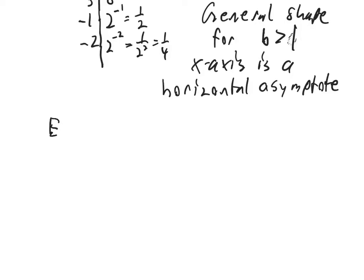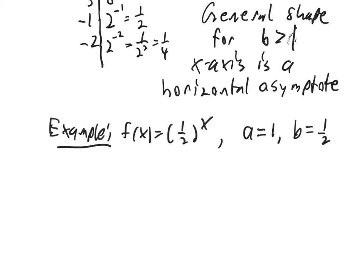All right. Now let's look at the other type of shape that you might get. Let's do this example. Let's say f(x) is 1 half to the x. So in this case the a value is 1, the b value is 1 half.